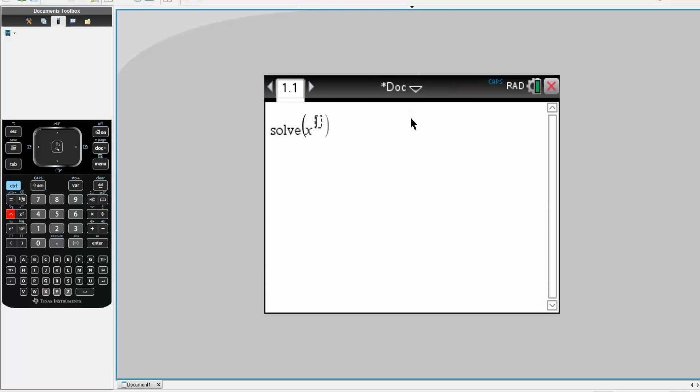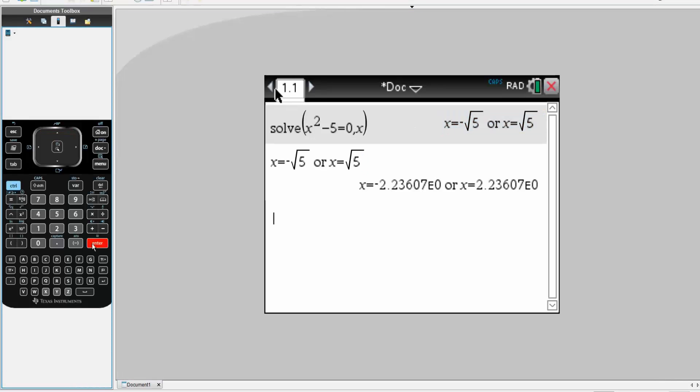We had x squared minus 5 is equal to 0, comma x. And we want an approximation of this. So Ctrl-Enter, and we get 2.236. So what we got using four iterations was 2.232. So this is approximately 0.004 off. So it's a really good approximation.